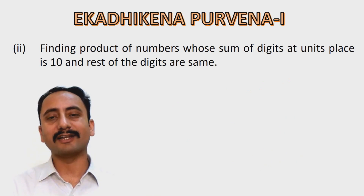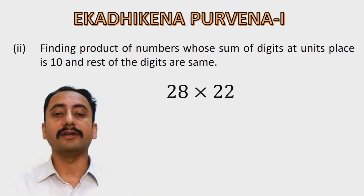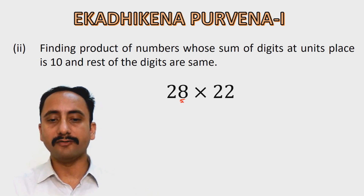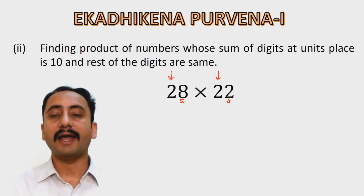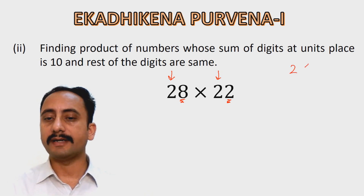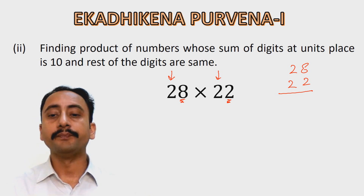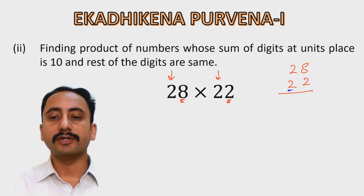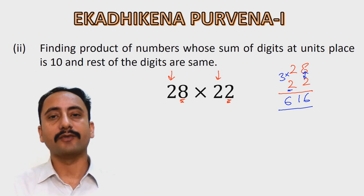The second application is finding the product of numbers whose sum of digits at the units place is 10 and the rest of the digits are the same. Let's take an example: 28 multiplied by 22. The digits at units place sum to 10 and the rest of the digits are the same. The method is exactly the same as finding squares of numbers ending with 5. One more than 2 is 3; multiply 3 by 2 to get 6. Then the product of 8 and 2 is 16. So 28 multiplied by 22 is 616.